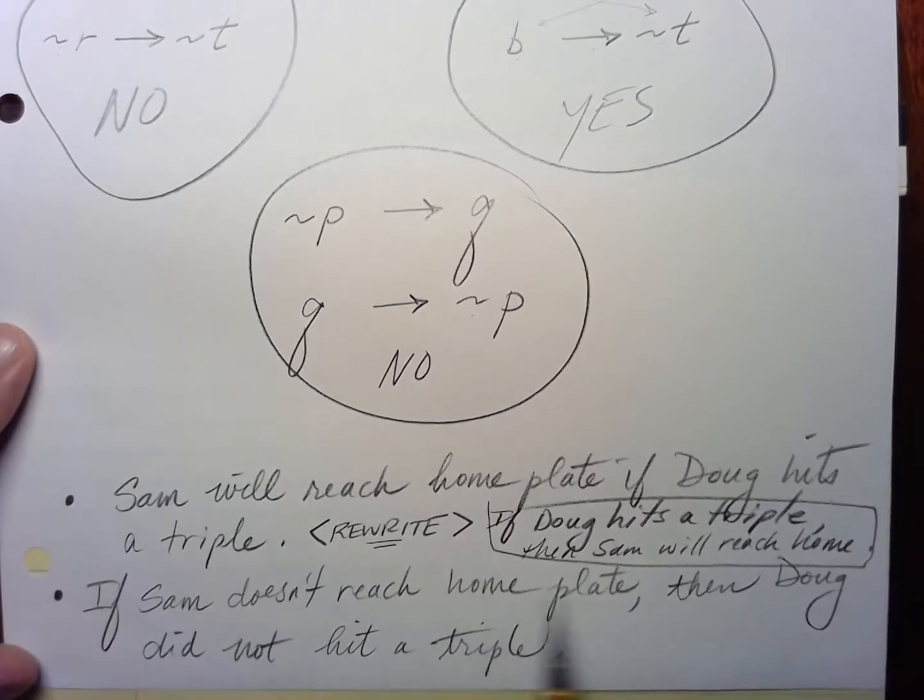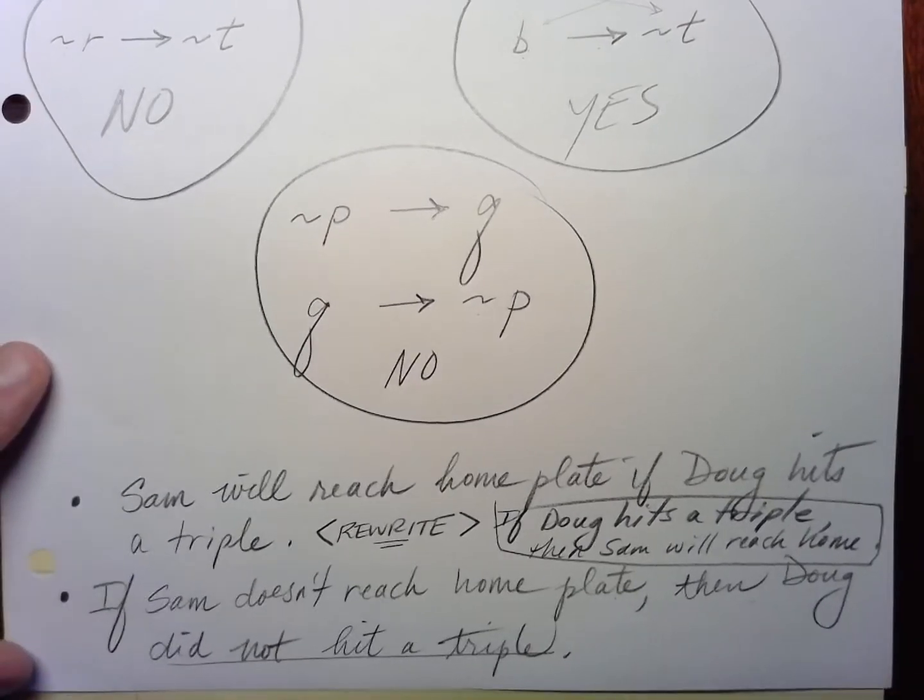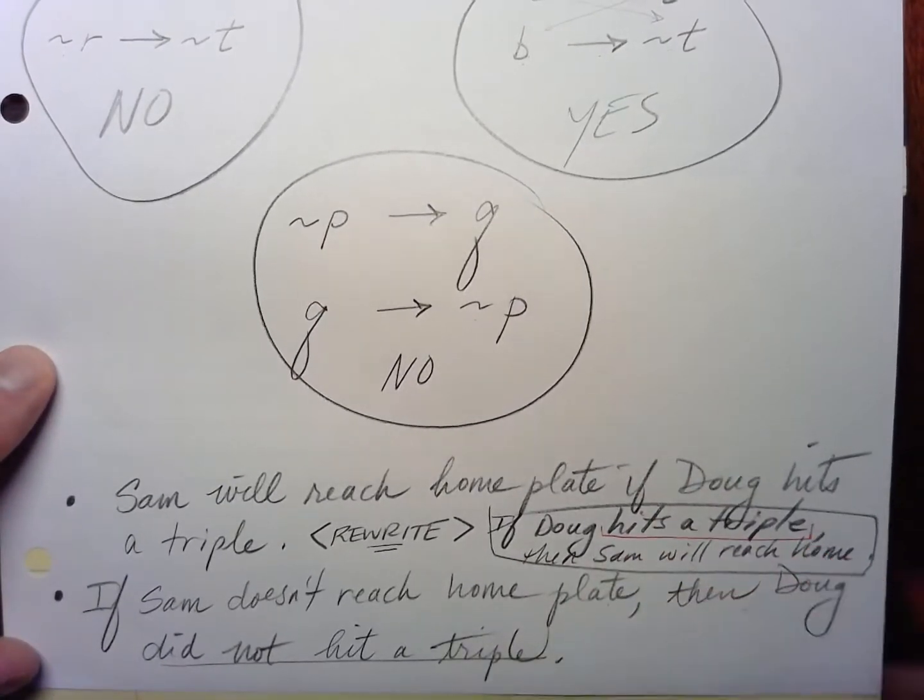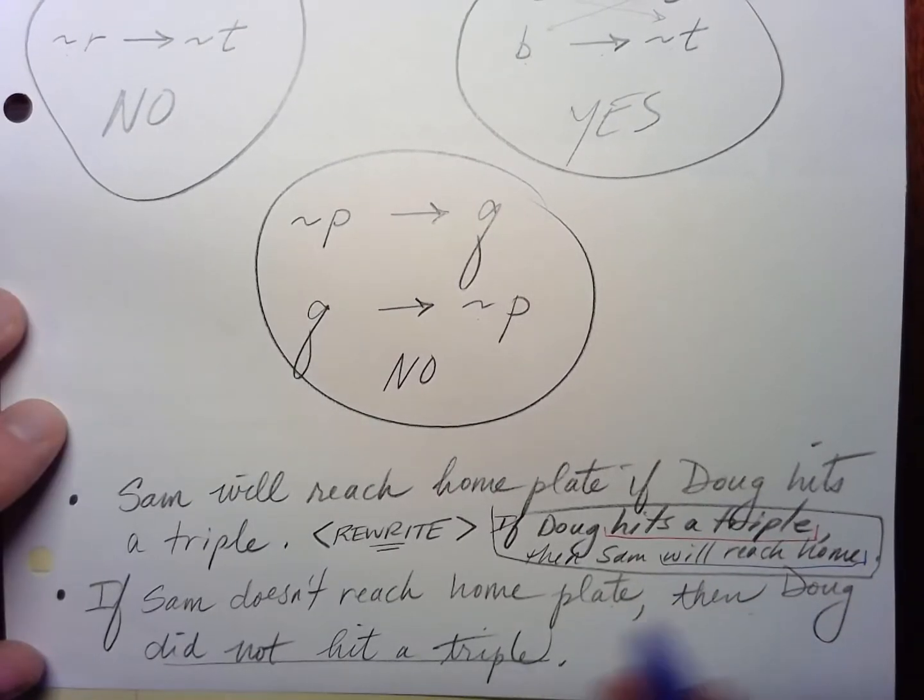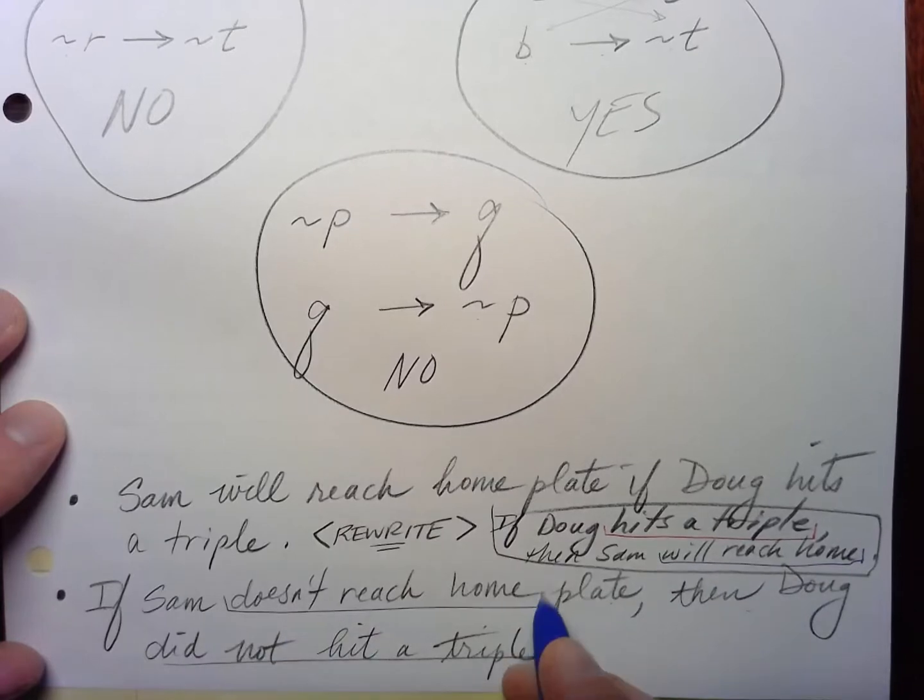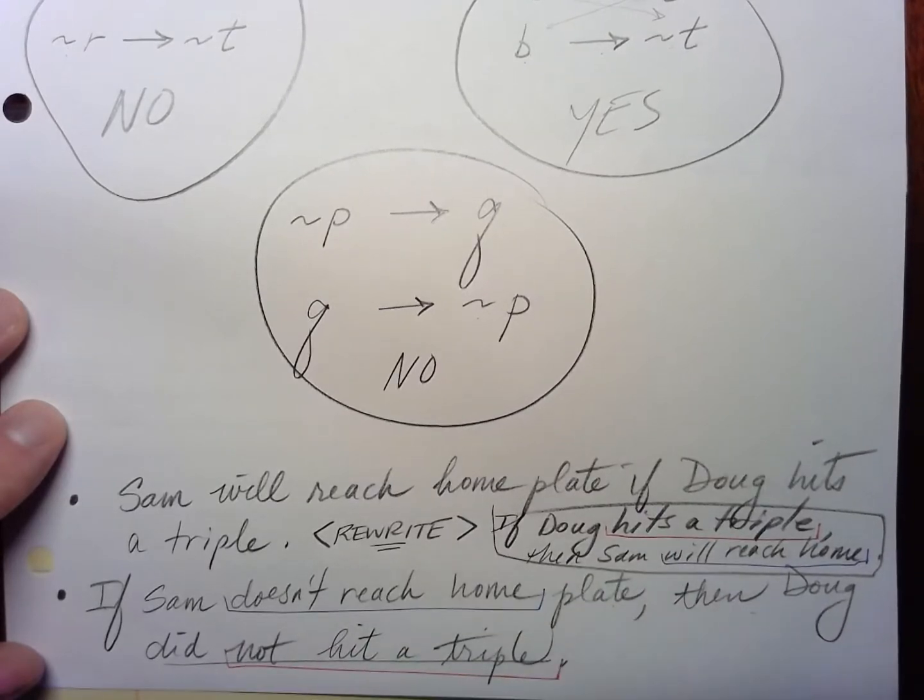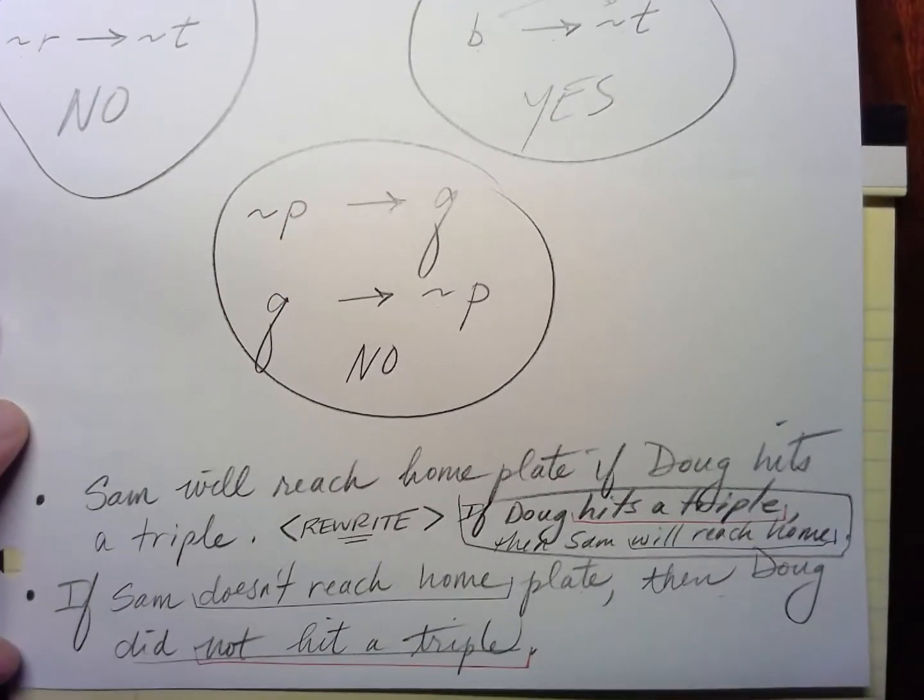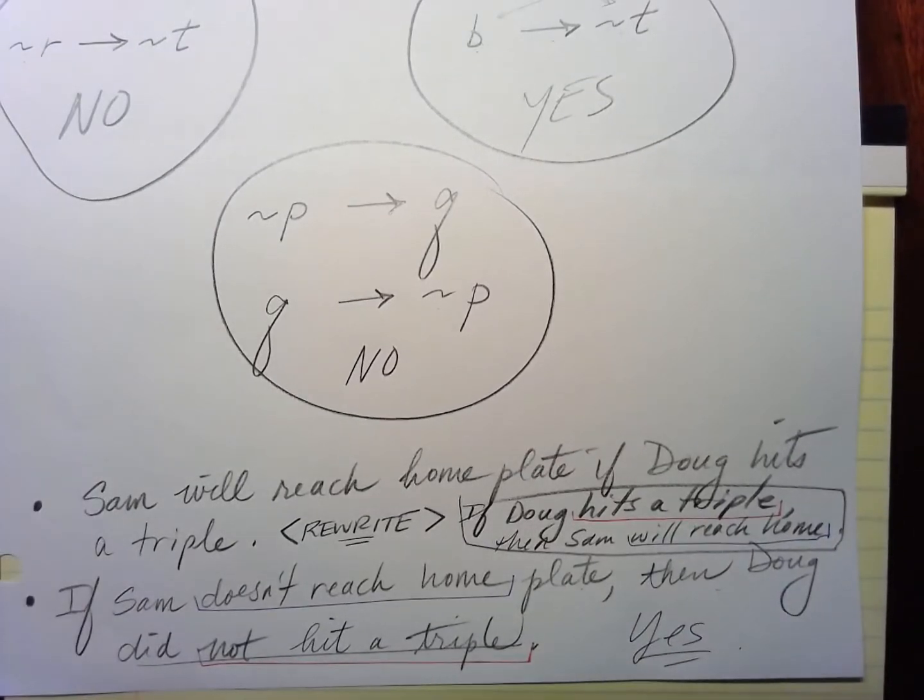If Sam doesn't reach home base, or plate, then Doug did not hit a triple. So we took the hitting a triple, and reaching home base, and we flipped them. So reaching home base, and we flipped them, and we negated them. So doesn't reach home base, and hits a triple, comes down here, not hit a triple. So the answer here is yes. These are logically equivalent statements.